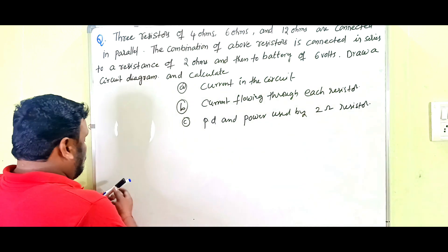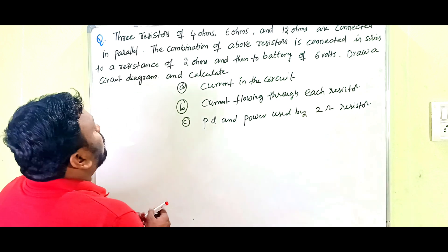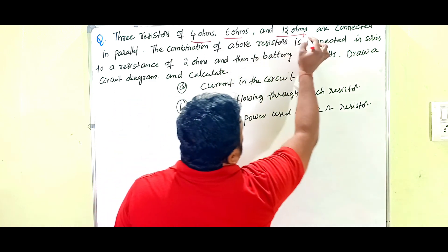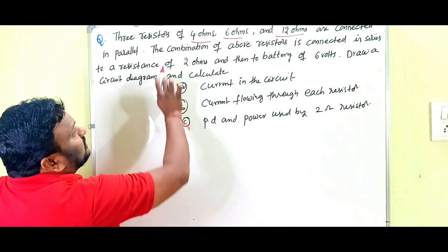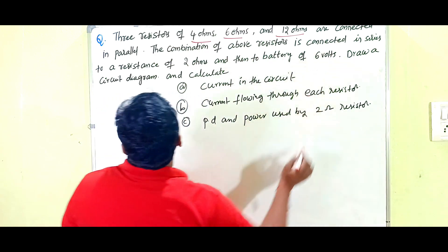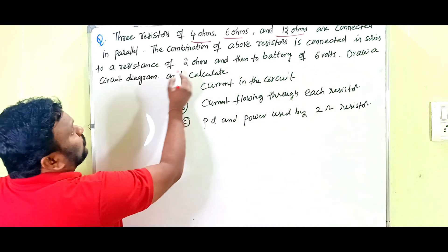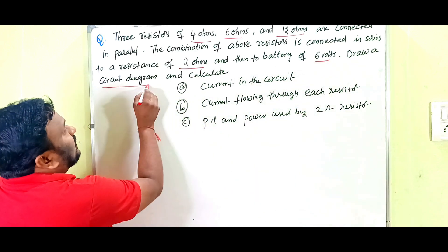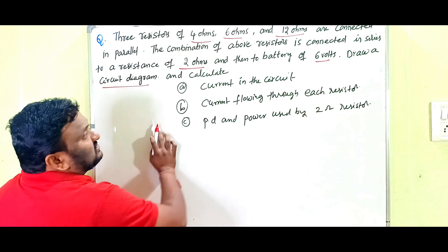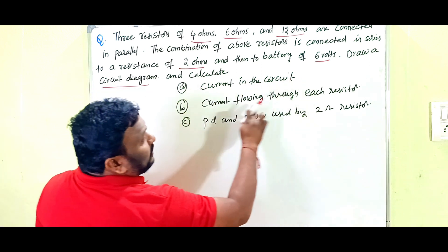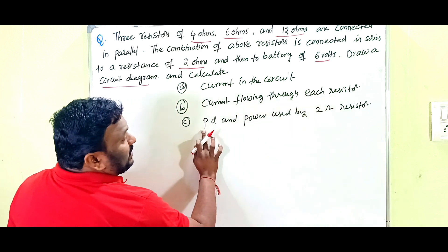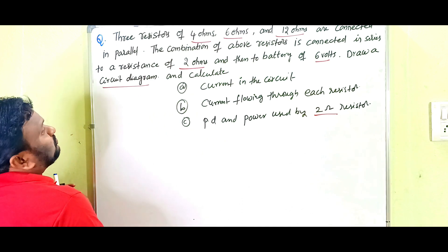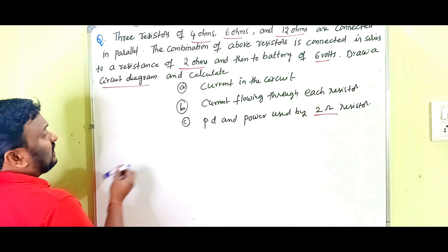Three resistors of 4 ohms, 6 ohms, and 12 ohms are connected in parallel. The combination of these resistors is connected in series to a resistance of 2 ohms and then to a battery of 6 volts. Draw a circuit diagram and calculate: current in the circuit, current flowing through each resistor, potential difference, and power used by the 2 ohms resistor.